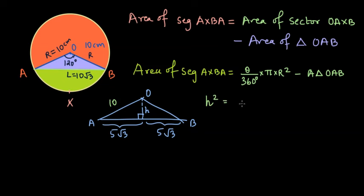And so we have H square is equal to hypotenuse square minus 5 root 3 square. This gives me H square to be equal to 100 minus 75 equal to 25. And therefore, H is equal to 5 centimeters.